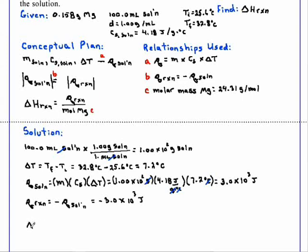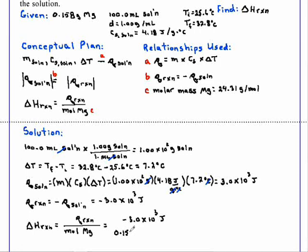Finally, our enthalpy of the reaction we will find by taking Q of the reaction and dividing by the moles of magnesium. This equals negative 3.0 times 10 to the 3rd joules. But we don't have moles. We have 0.158 grams of magnesium, which we convert to moles using its molar mass: 1 mole of magnesium has a mass of 24.31 grams.